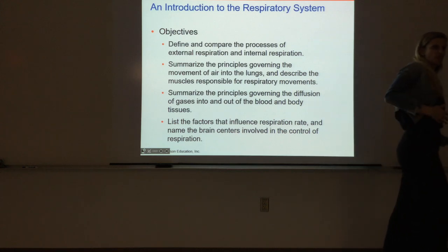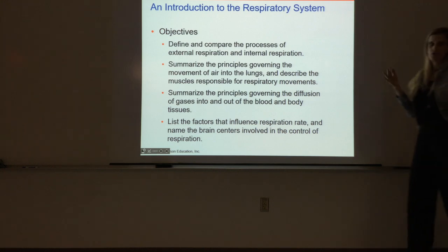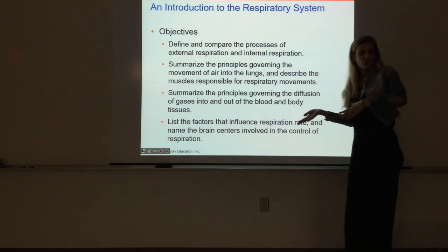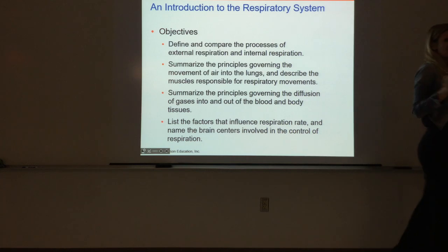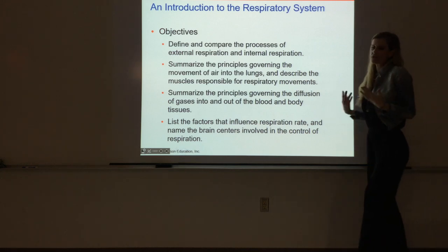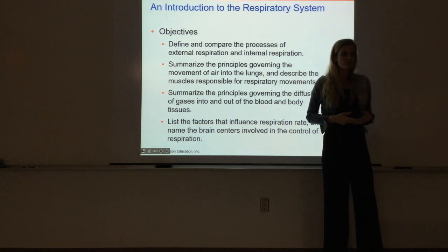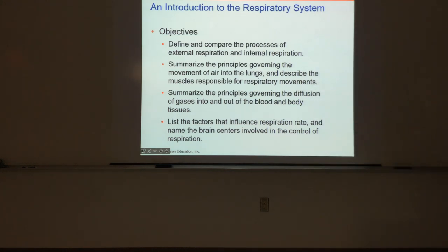How we change volume, how we change pressure - all of that involved in bringing air in and out of our lungs. Then we'll talk about the actual gas diffusion that occurs: the diffusion of oxygen into our blood and CO2 out of our blood. And finally, we'll talk about how we control respiration - the centers in the brain we utilize to control respiratory rate, the rhythm of respirations, and how deep we breathe.